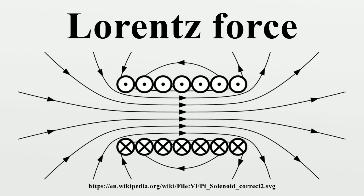Lorentz force in analytical mechanics: The Lagrangian for a charged particle of mass m and charge Q in an electromagnetic field equivalently describes the dynamics of the particle in terms of its energy, rather than the force exerted on it. The classical expression is given in terms of A and the scalar potential. Using Lagrange's equations, the equation for the Lorentz force can be obtained. The potential energy depends on the velocity of the particle, so the force is velocity dependent and therefore not conservative. The relativistic Lagrangian is the action as the relativistic arc length of the path of the particle in spacetime, minus the potential energy contribution, plus an extra contribution which quantum mechanically is an extra phase a charged particle gets when moving along a vector potential.